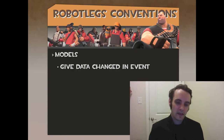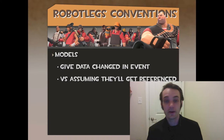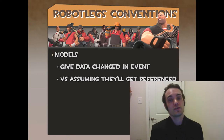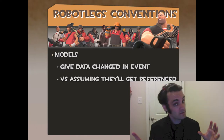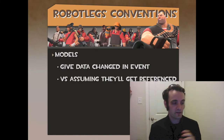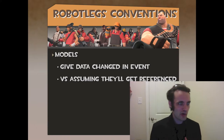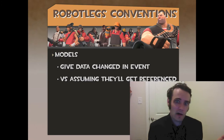Models: they give data that changes in the event versus they'll get referenced. If you give data that you changed in the event, no one has to have a reference to the actual model. They can code to the events — when this particular event happens, regardless of who it was sent from, I know that this particular event is going to have that. Now, is it really tight coupling when you know that it's a high score model with this event, even though it's just an event as a string name? It's not really the model reference.